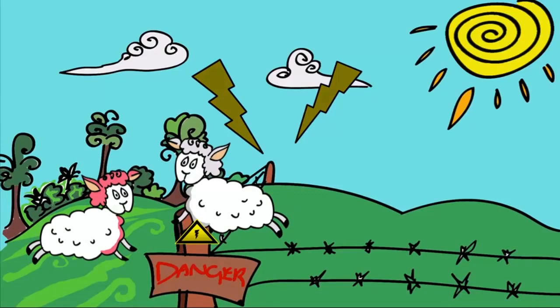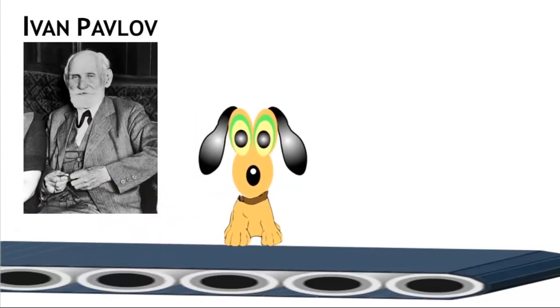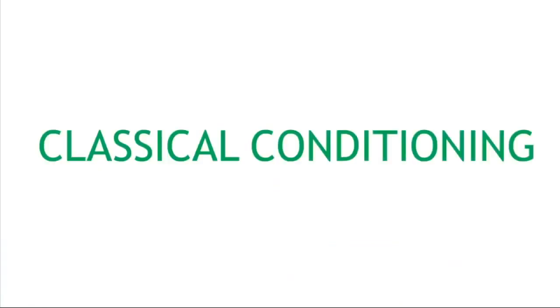The sheep even stay away from the fence when it isn't on. Ivan Pavlov is a famous scientist who performed experiments to try and condition animals. He researched classical conditioning.